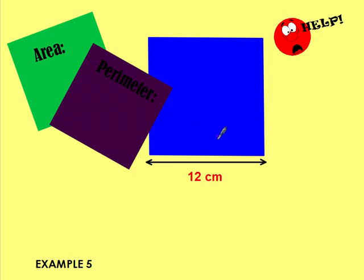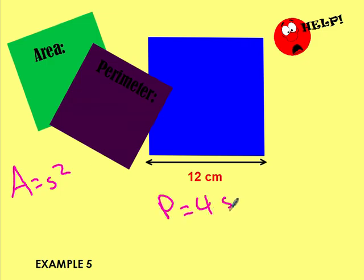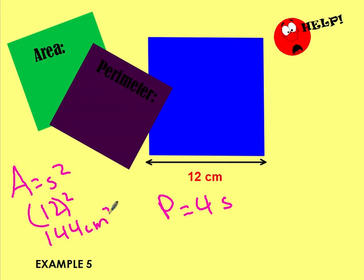Square — area equals side squared, perimeter equals 4 times the side. So that's 12 squared, which is 144 centimeters squared. And perimeter is 4 times 12, which is 48.